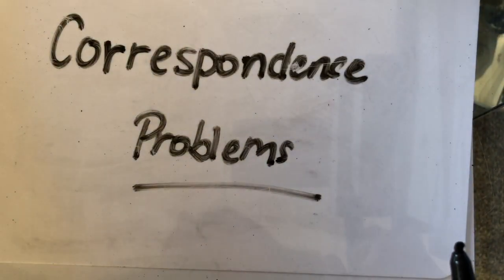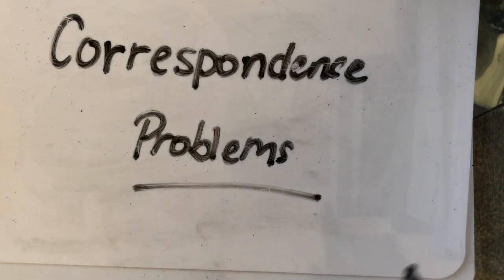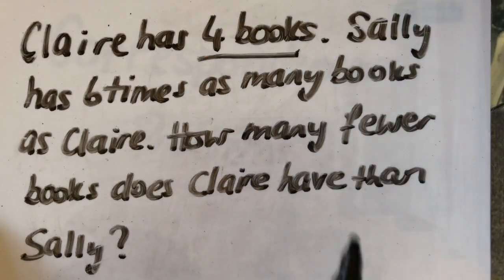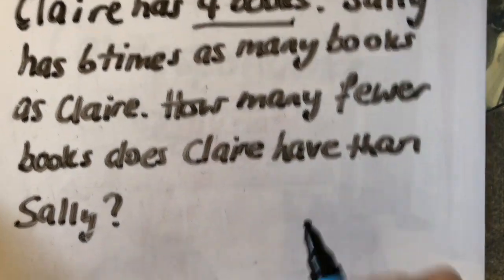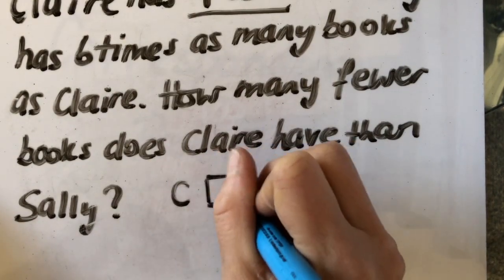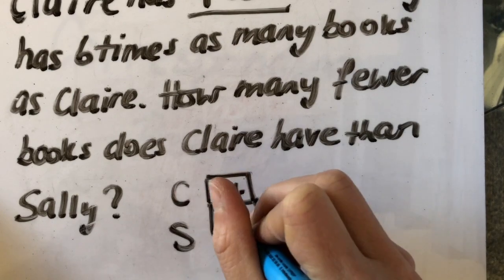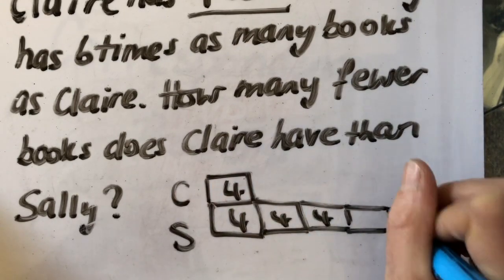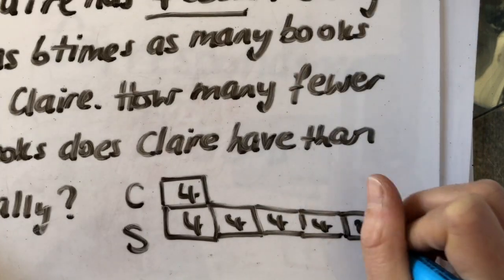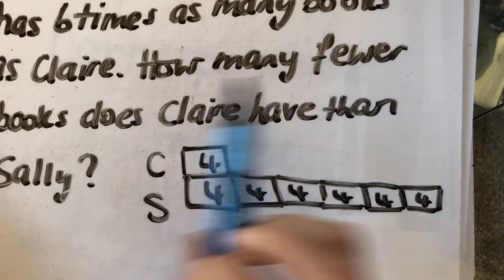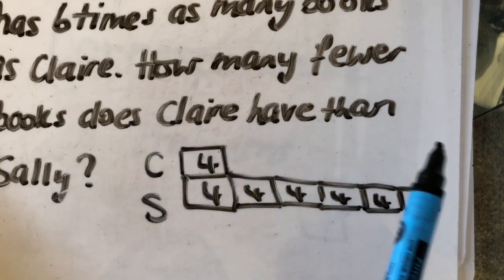And the next one I'm going to look at is another difference problem, but this time it's the smaller value that's provided. So Claire has 4 books. Sally has 6 times as many. So Claire here has 4 books. Sally has 6 times as many. 4, 5, 6. 6 times as many. How many fewer books does Claire have than Sally?